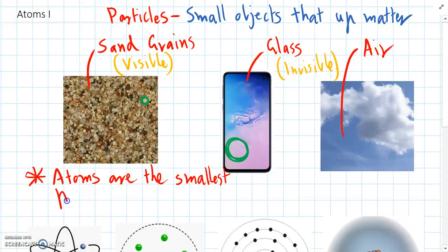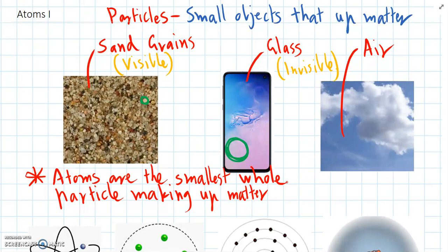So atoms are the smallest particles making up matter. And we can add some extra detail and say they're the smallest whole particle. Because they are made up of other things, but for now we'll think of them as one object.